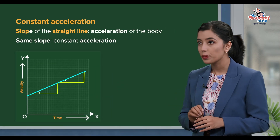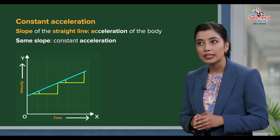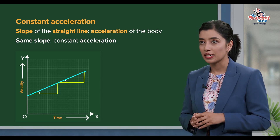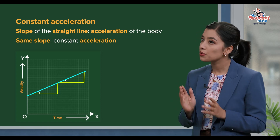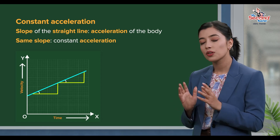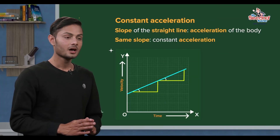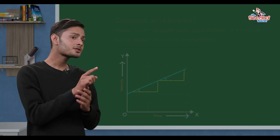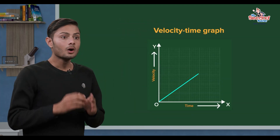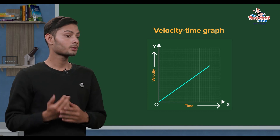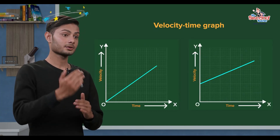At all points on the velocity-time graph, the acceleration is the same — the slope is constant, and that means the acceleration is constant. In the last session, the velocity-time graph started with the origin, meaning this graph starts at the origin.